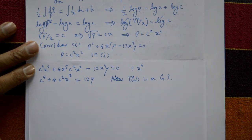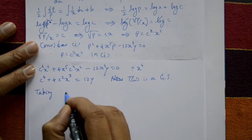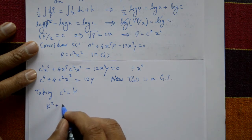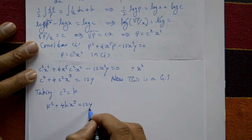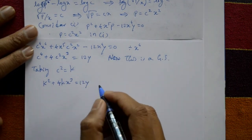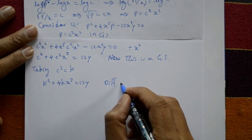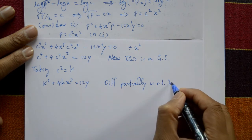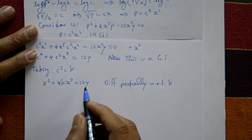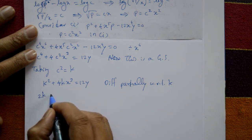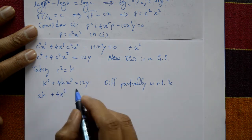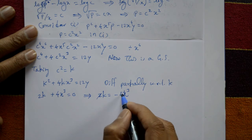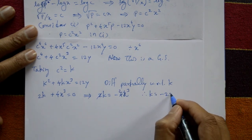Now find the singular solution. Let k equal c squared, so the general solution becomes k squared plus 4k x cubed equals 12y. Differentiate partially with respect to k, treating other variables as constant: 2k plus 4x cubed equals 0. Therefore 2k equals minus 4x cubed, so k equals minus 2x cubed.